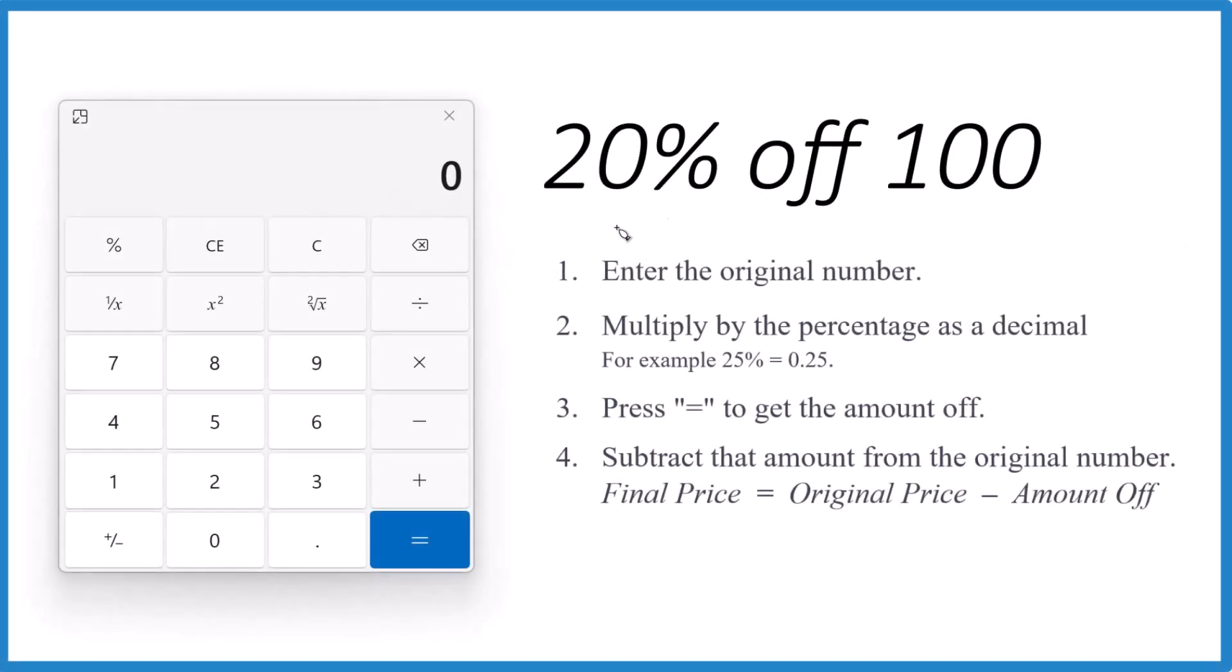This is Dr. B, and we're going to take 20% off of $100. We're going to use these steps here to do that. So first off, we want to enter the original number, that's the $100.